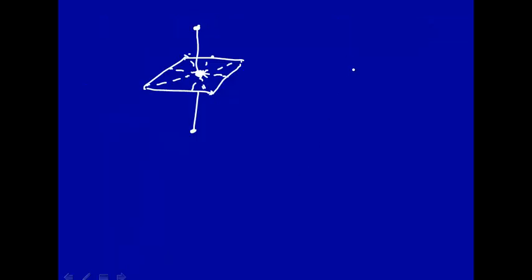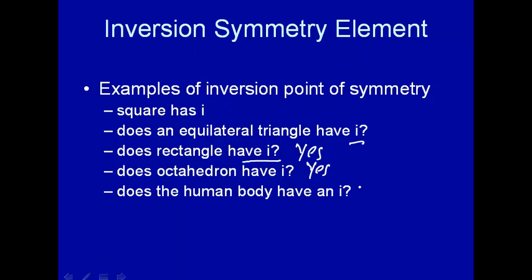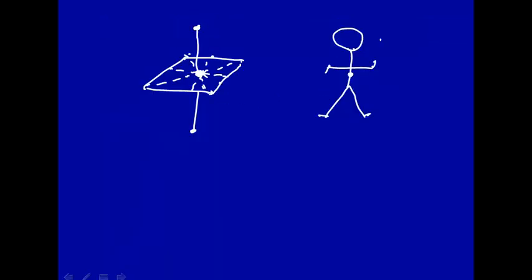How about the human body? Let's draw the human body — these are our feet, these are our hands, and this is our head. Where would the center be? Right here in the center. But in that case the feet would be up here and the head would be down there, giving a different structure. So the human body does not have a center of inversion — if it did, we'd look kind of strange. So if you take a structure, invert it through an inversion center, and get the same structure back again, then it has an inversion center.